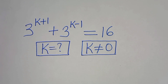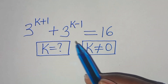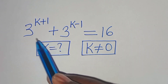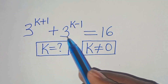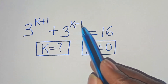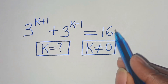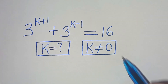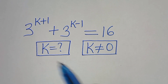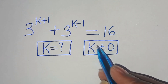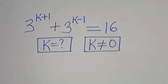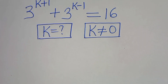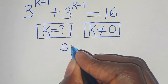We're going to solve this exponential equation: 3 to the power of k+1 plus 3 to the power of k−1 equals 16. What is the value of k, given that k is not equal to 0? Let's provide a solution.